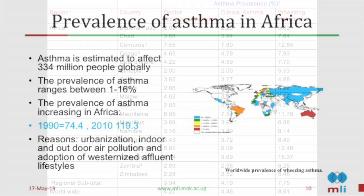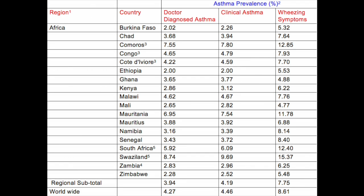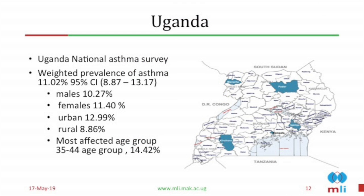There is variability in the prevalence of asthma. The global prevalence is estimated at 8.6%, while the African prevalence from that study is estimated at 7.7%. In the National Asthma Survey that we conducted in Uganda in 2016, we found that the prevalence of asthma in Uganda was 11% — almost 4% above the African average. Asthma was more common in urban areas, and the most affected age group was the young.